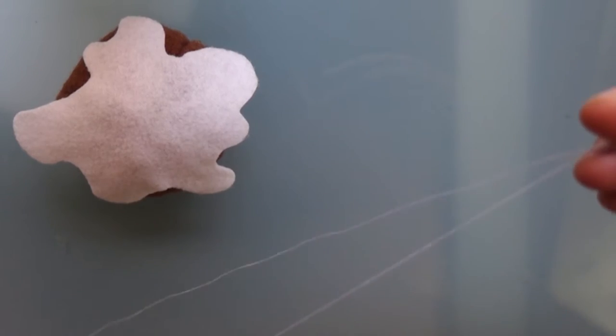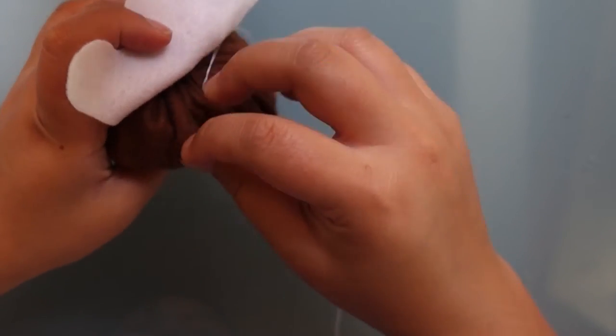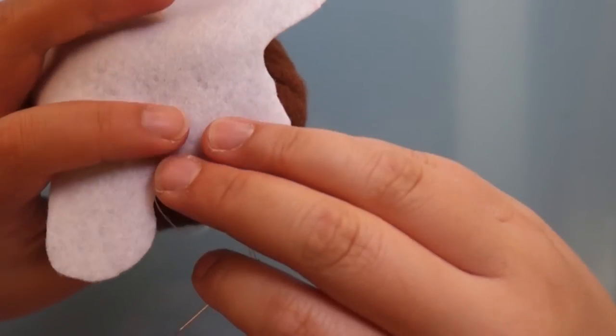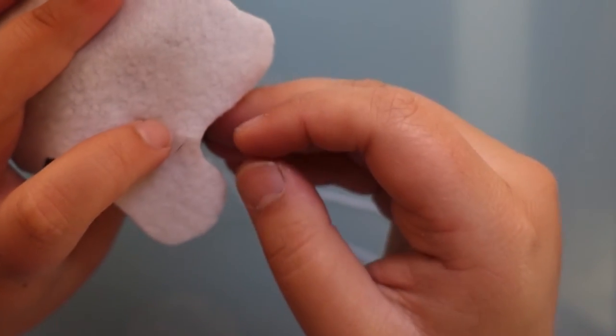Then pick up your needle and thread, this time white thread, double threaded of course. And we're going to start sewing our icing to our pudding. As you can see we want the knot to be secured in the middle of the pudding so it will be hidden for later on.